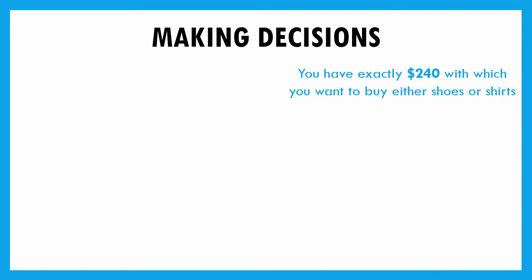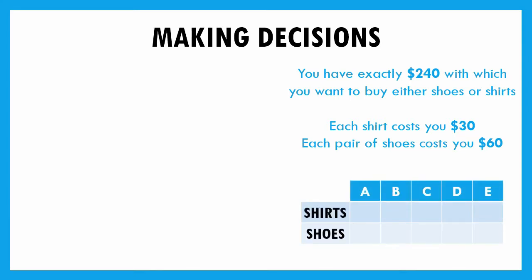So let's look at making decisions. Let's say you have $240 and you're going back-to-school shopping to buy either shoes or shirts. Every shirt costs $30, and every pair of shoes costs $60. If we set up a table with shirts and shoes, if you wanted to just buy shirts, you could buy eight — but then you couldn't buy any shoes. If you only bought shoes, you could buy four pairs, but no shirts. We also have options in between: maybe six shirts and one pair of shoes, four shirts and two pairs, or two shirts and three pairs. We have different choices about how to use our money.